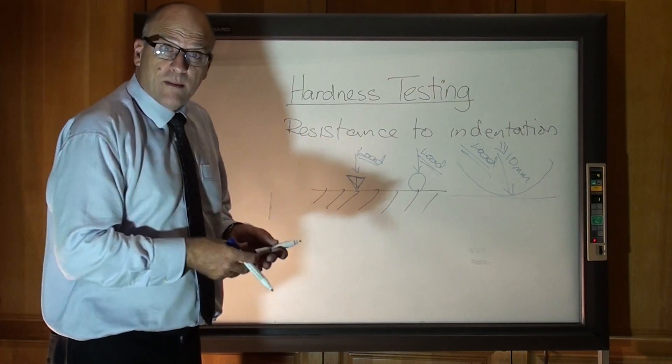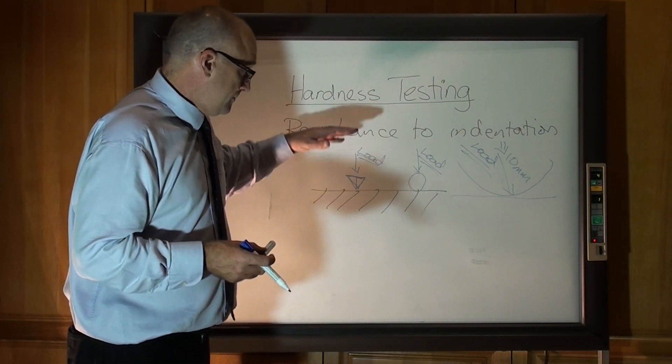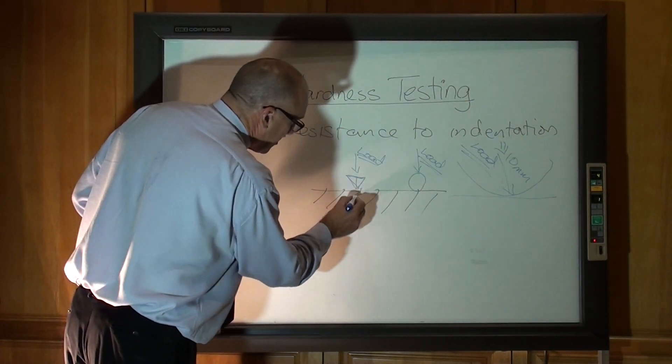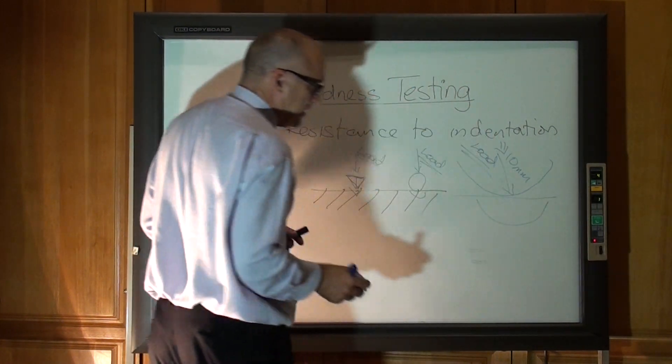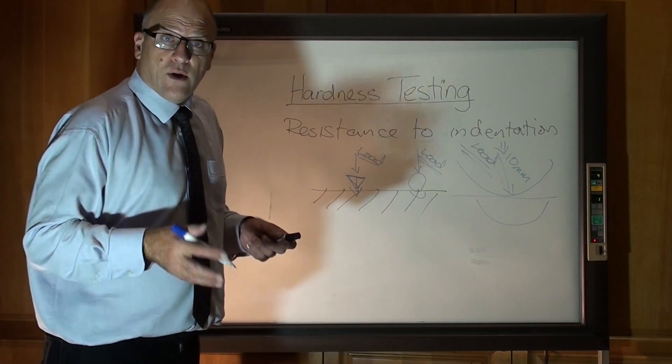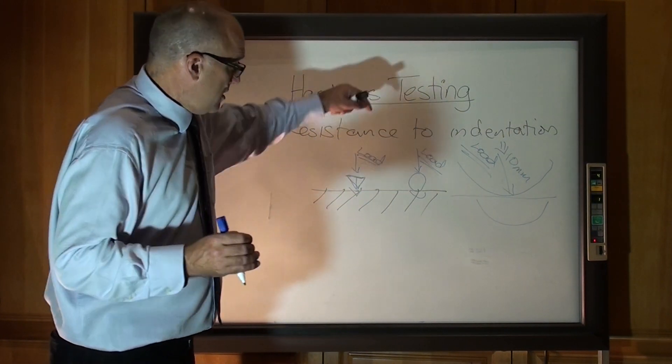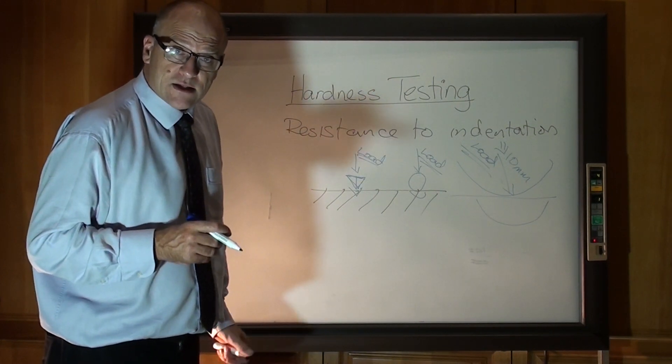Put the load on it for a certain amount of time. Or, and then just see how far in it goes. So that diamond pyramid will go into there, that will go into there, that will go into there. So you either load it up for a set amount of time, set amount of load, and just measure how far it goes in. That's what a hardness test is.